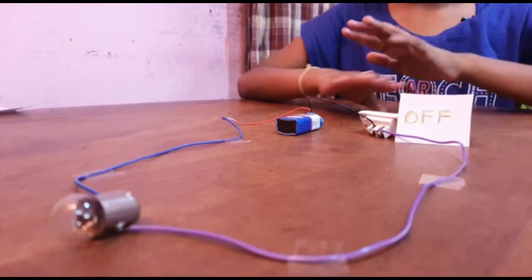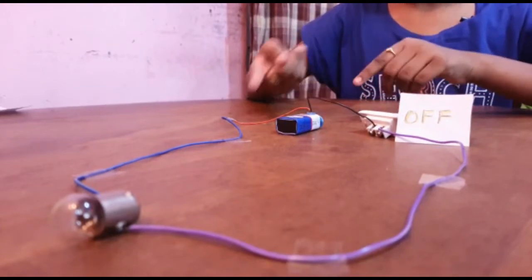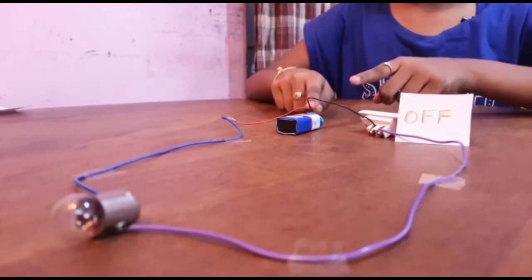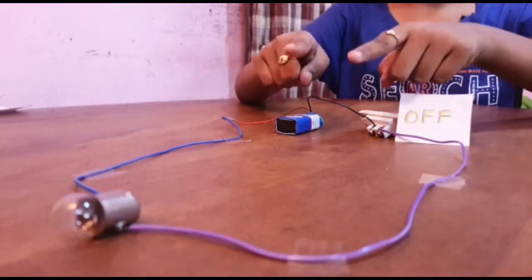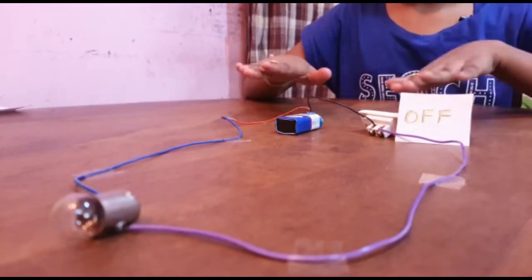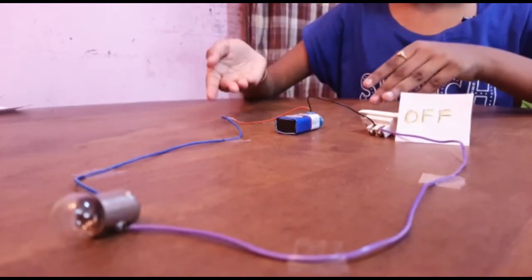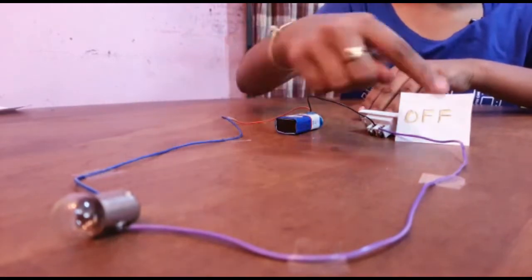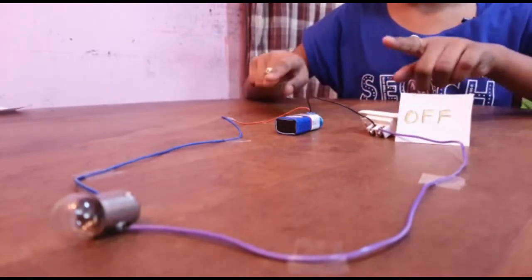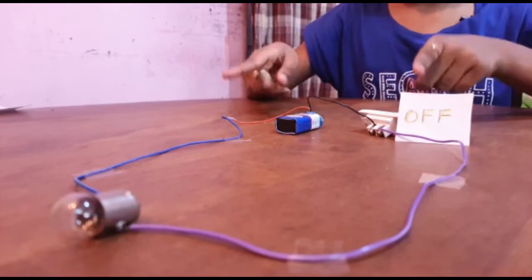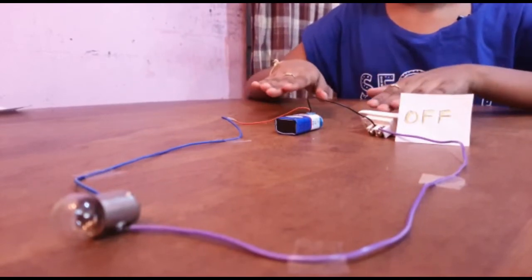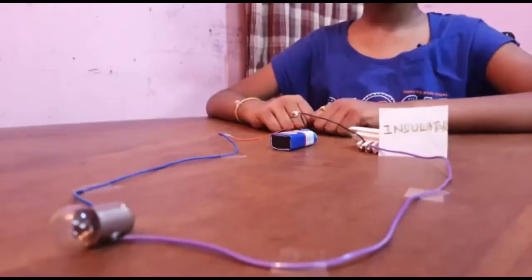When the switch is open, the electric current does not flow from the source that is the battery to the desired load. Thus the circuit does not conduct the electricity and zero potential difference occurs between two terminals of the open switch due to the incomplete path.